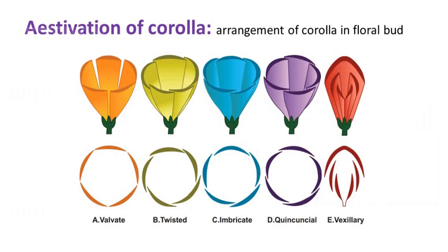Flowers are also categorized based on their corolla arrangement in the floral bud, which is called estivation. In these figures, just note how the petals are arranged. For example, in valvate form, petals are not overlapped. But in the twisted form, one corner or a side of the petal is covered by the other petal, and so on.